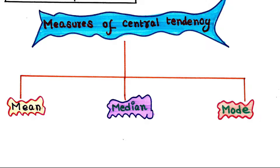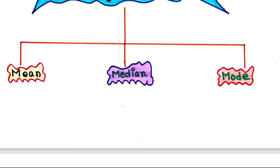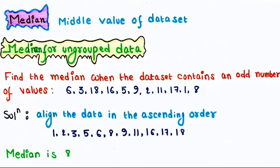We have already talked about mean. Let's see what median is. Median is the middle value of a data set where the data is arranged in ascending order or in descending order. Let's see an example.